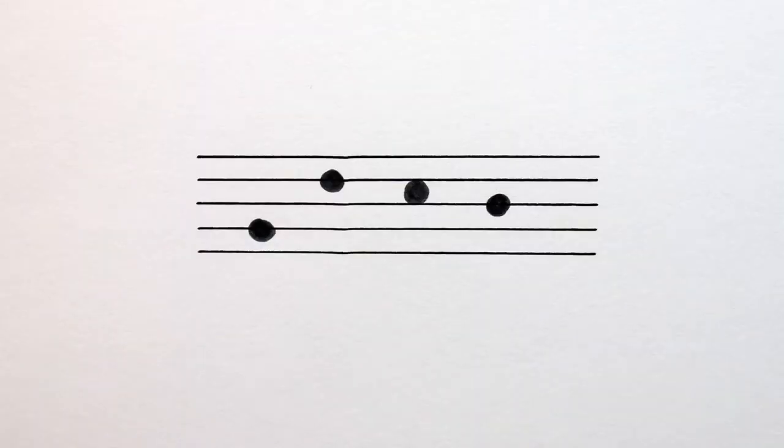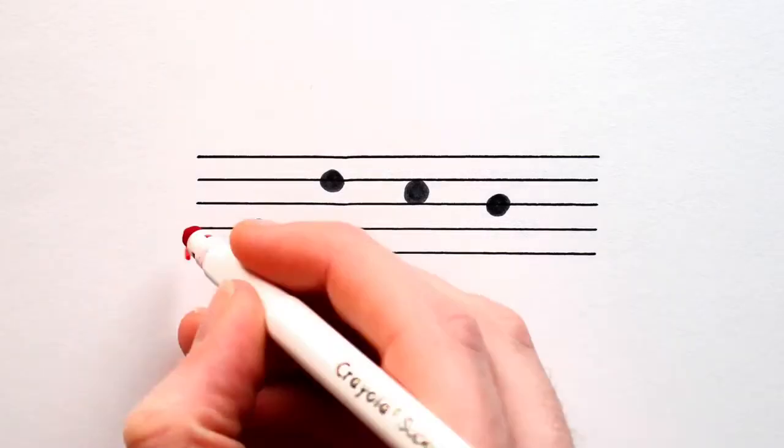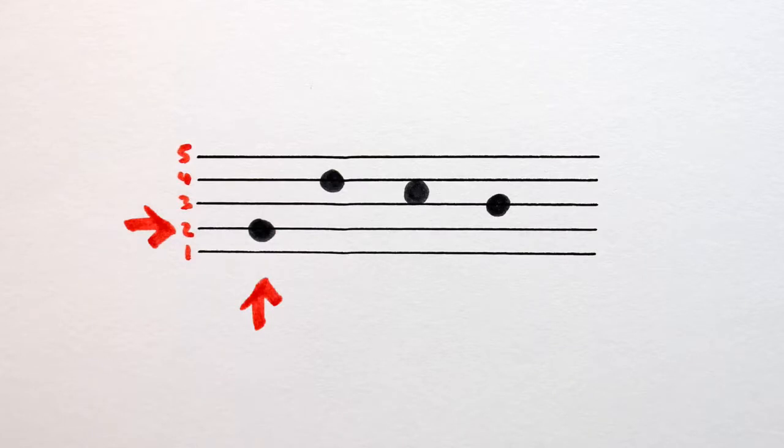Anyways, here's a whole bunch of stemless crotchets. Let's put in their stems. So, this first guy is on the second line. This is below the middle line, so we should draw its stem on the right side, going up, like so.